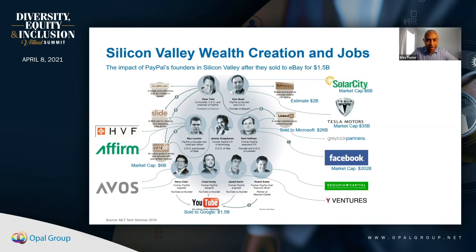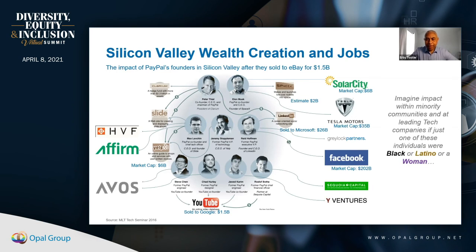Out here on the West Coast there was a small company called PayPal. In 2002 the nine founders — eight white guys, one Asian — sold to eBay for 1.5 billion dollars. You may recognize the person at top right: Elon Musk. The logos surrounding them include SpaceX, Tesla, and LinkedIn — Reed Hoffman founded LinkedIn and sold it to Microsoft for 26 billion. Three engineers at the bottom — Steve Chen, Chad Hurley, Jawed Karim — in 2006 sold YouTube to Google for 1.5 billion. But I want you to imagine what the world would look like if just one of those individuals was Black, Latino, or a woman, in terms of growth and wealth.